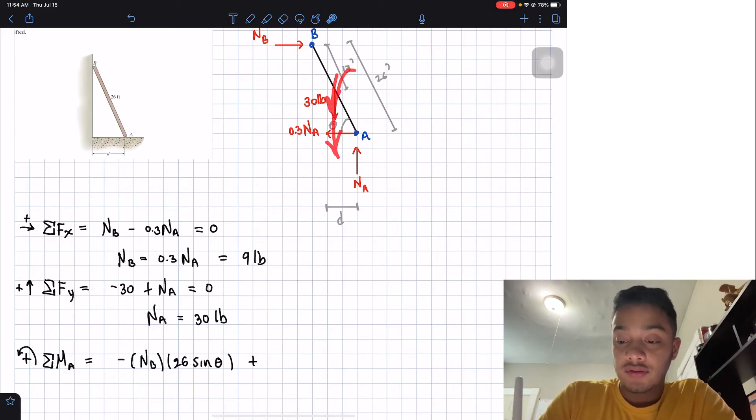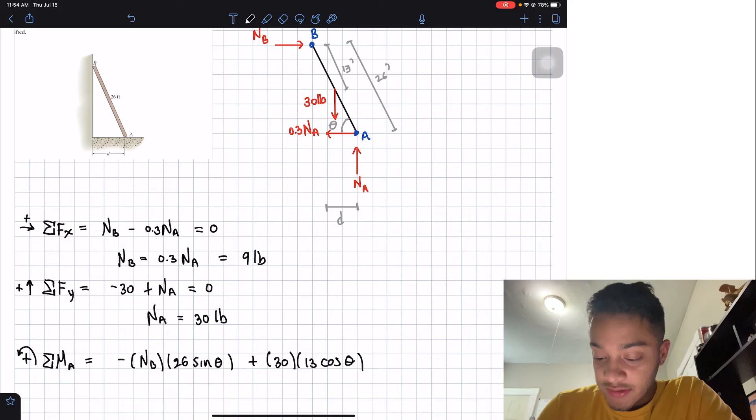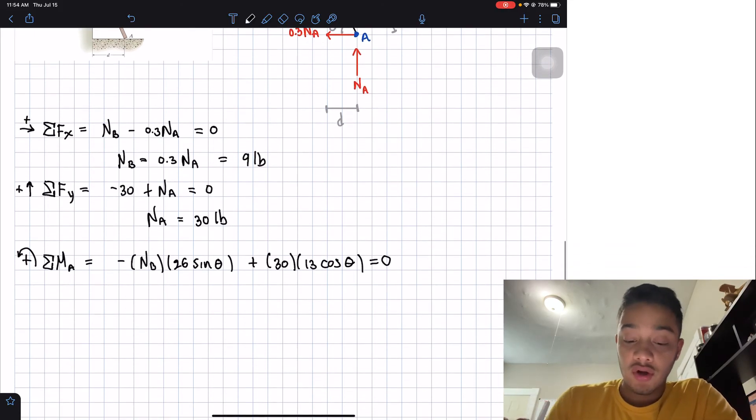So we got a positive. We got 30 pounds, and what we have is that we have the hypotenuse, which is 13, multiplied by the cosine of my angle theta. And that's all I have. This should be equal to zero. So now we know NB is equal to 9. So what we're going to have is negative 234 sine theta plus 390 cosine theta, which should be equal to zero.